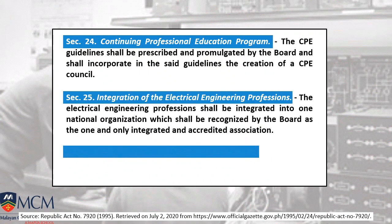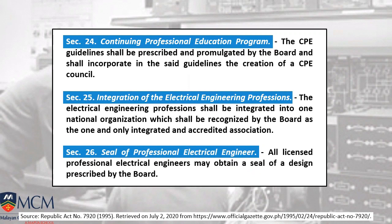Section 25 covers the integration of the EE profession into the national organization, which is the IIEE — the Institute of Integrated Electrical Engineers. Section 26 covers the seal of the Professional Electrical Engineer: only PEEs are allowed to seal a design.